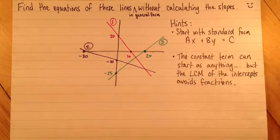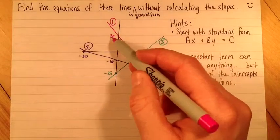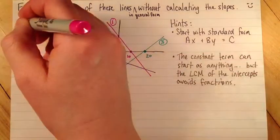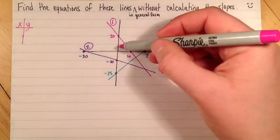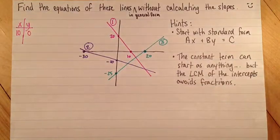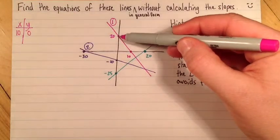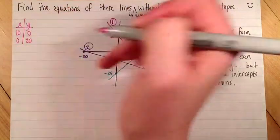I'm going to start with equation number 1, the pink equation. Just to help my thinking stay clear so I don't mix up any x's and y's, I'm going to make a little table of the two points that I have. I have the point x equals 10, y equals 0, that's my x-intercept. And I have the point x equals 0, y equals 20, that's my y-intercept.